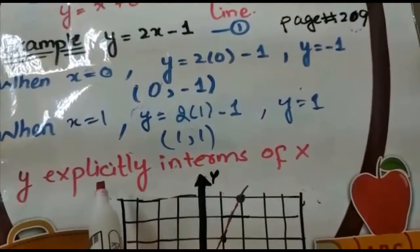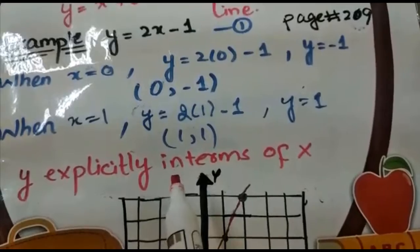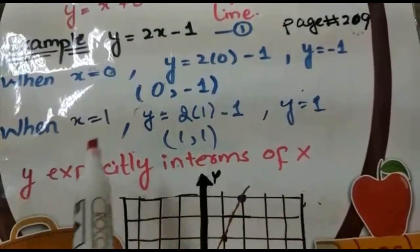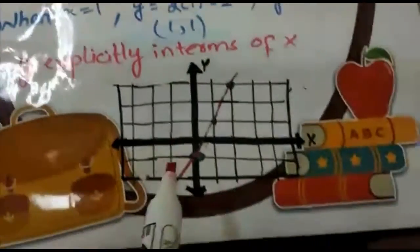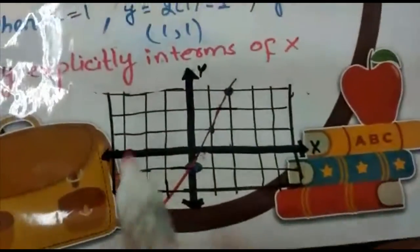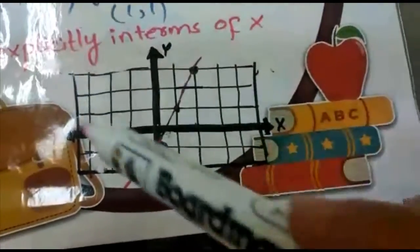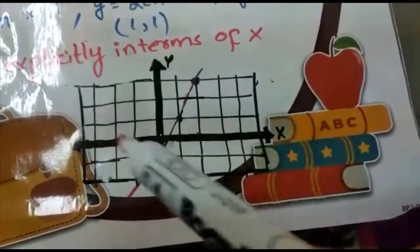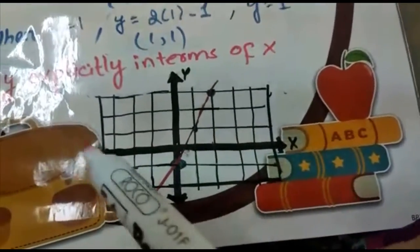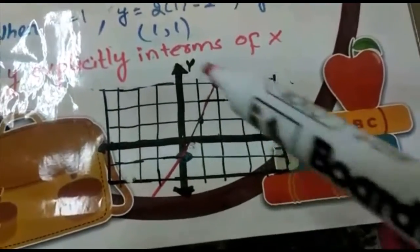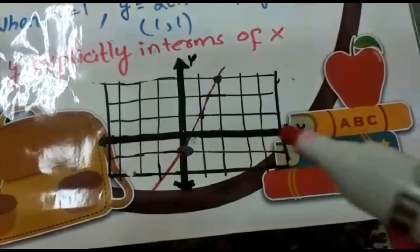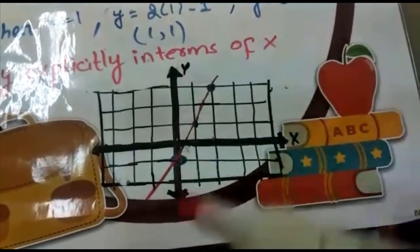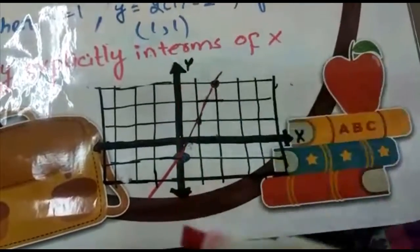In this equation y is explicitly stated in terms of x. Now look at the graph I have made — you have to make it on graph paper. The broader horizontal line represents the x-axis and the vertical line represents the y-axis.